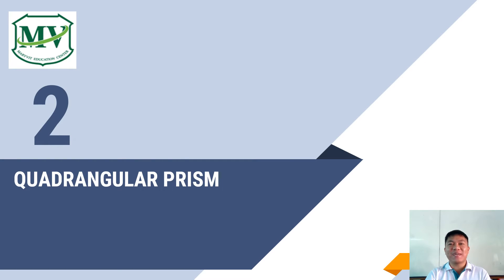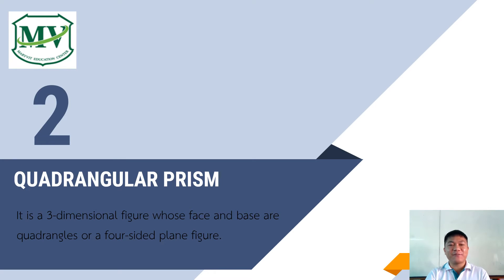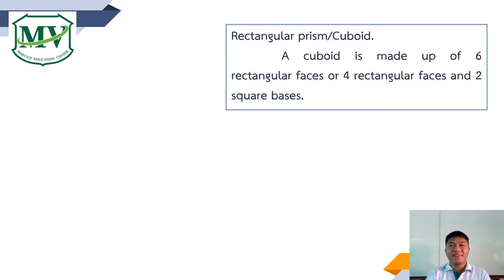The second type is the quadrangular prism. It is a three-dimensional figure whose face and base are quadrangles or four-sided plane figures. There are different types of quadrangular prism. The first is the rectangular prism or cuboid. A cuboid is made up of six rectangular faces, or four rectangular faces and two square bases.